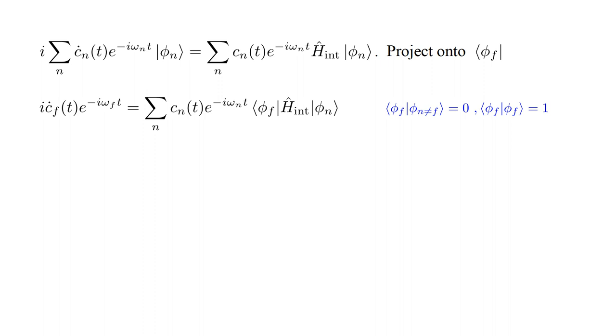On the right, each sum has a factor H-hat-interaction operating on phi-n projected onto phi-f. We call this the f-n matrix element of the interaction Hamiltonian.